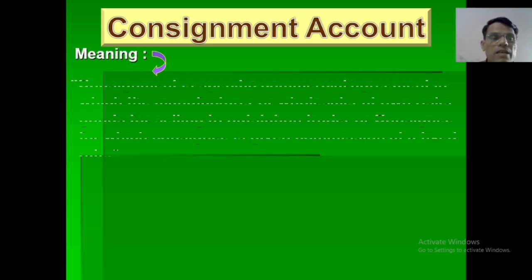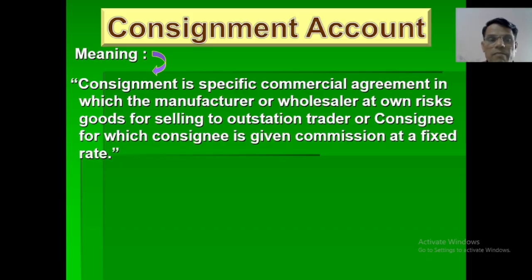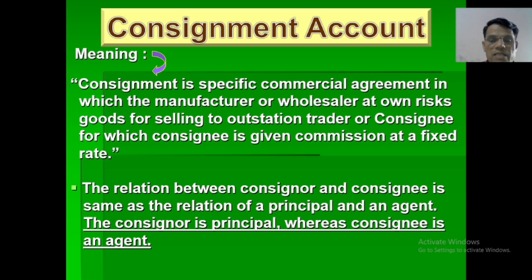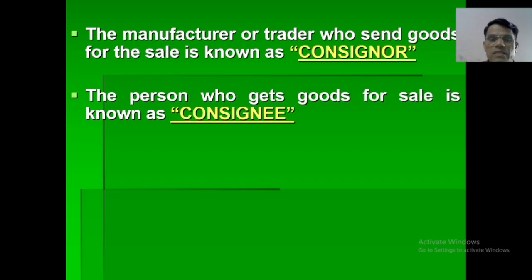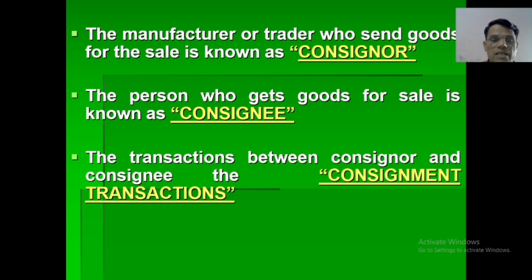Consignment Account. Consignment is a specific commercial agreement in which the manufacturer or seller sends goods on risk to an outstation trader or consignee, for which the consignee is given commission at a fixed rate. The relation between consigner and consignee is that of principal and agent. The consigner is the principal, whereas the consignee is the agent. The manufacturer or trader who sends goods for sale is the consigner, and the person who receives goods for sale is the consignee.